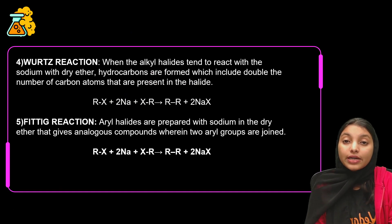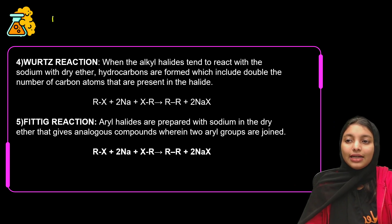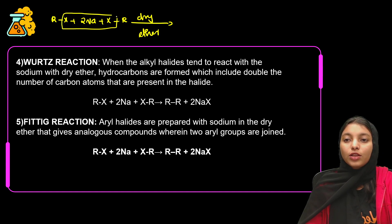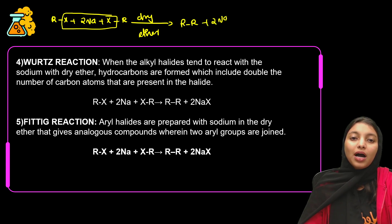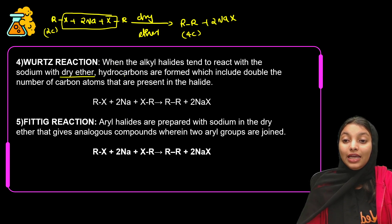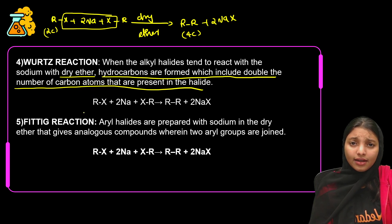Next we will see Wurtz Reaction. Wurtz Reaction is very simple. This reaction is very important — it doubles the number of carbons. When we use alkyl halide and treat it with sodium in the presence of dry ether, hydrocarbons are formed. Hydrocarbons are formed which include double the number of carbon atoms present in the halide. For example, two carbon compounds give four carbon compounds.